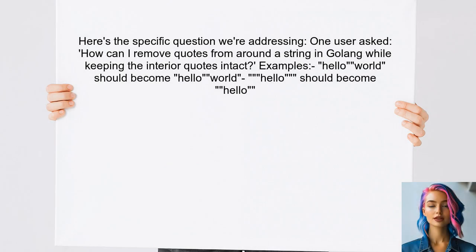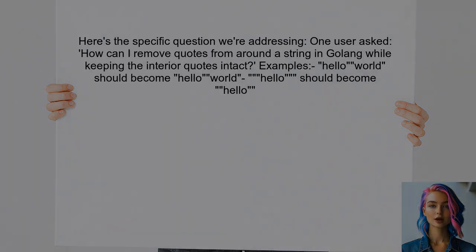Here's the specific question we're addressing. One user asked: how can I remove quotes from around a string in Golang while keeping the interior quotes intact? They provided examples that really highlight the issue. Let's dive into this together and find a solution.